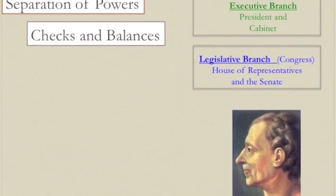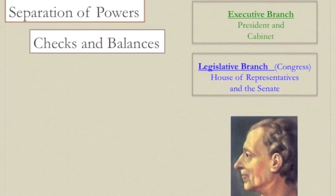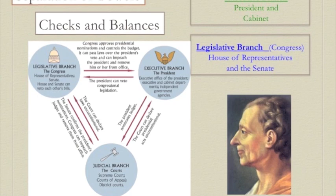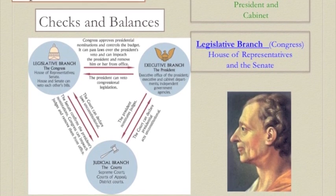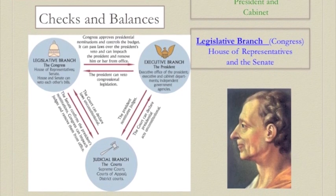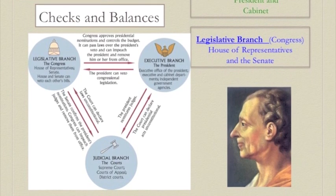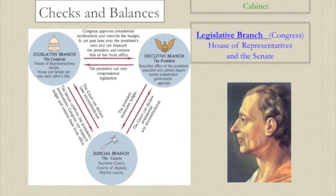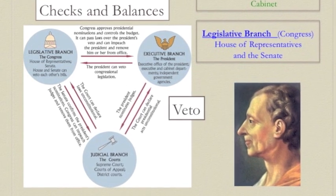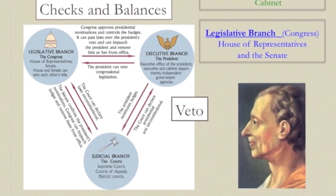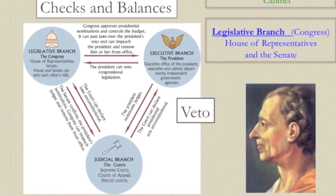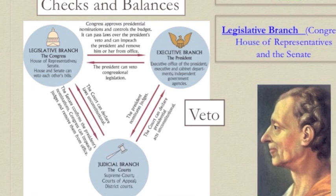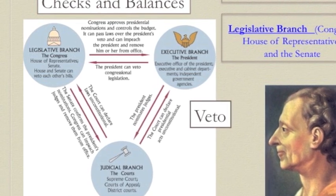A term relating to this is checks and balances. The executive and legislative branches can check or stop the other branch of government from becoming too powerful. For example, if Congress passes a law that the president doesn't think is in the best interest of the nation, he can veto it — which means he can cancel that law from coming into effect. But Congress can override the president's veto if they can get a two-thirds majority to agree to it.